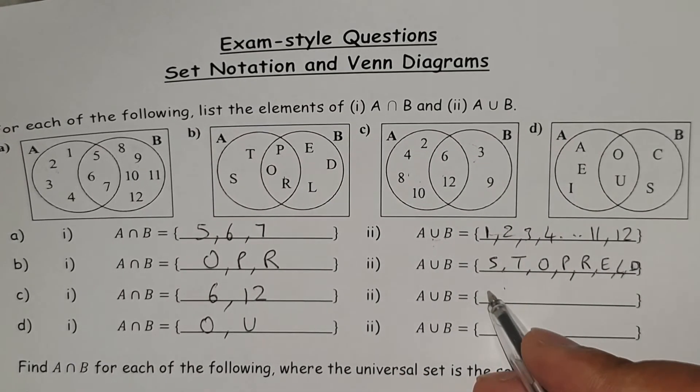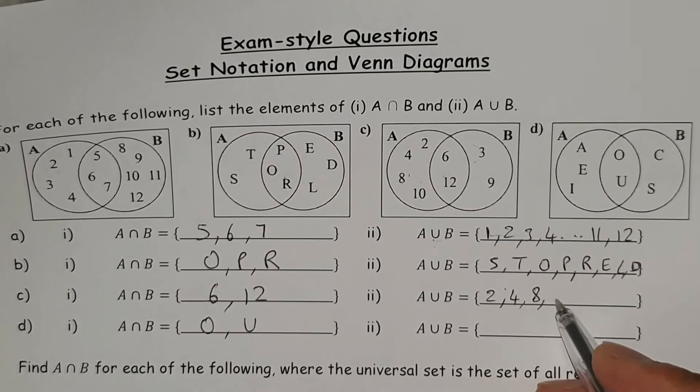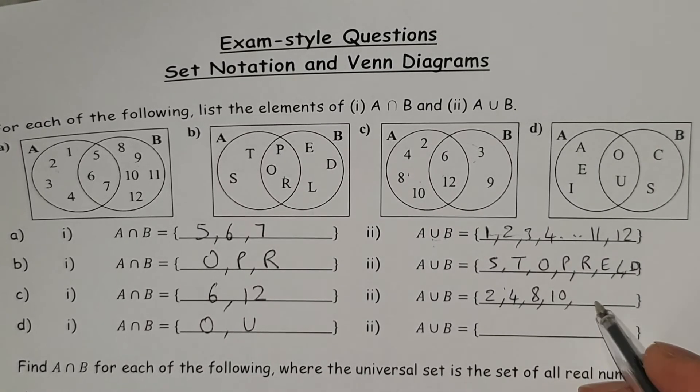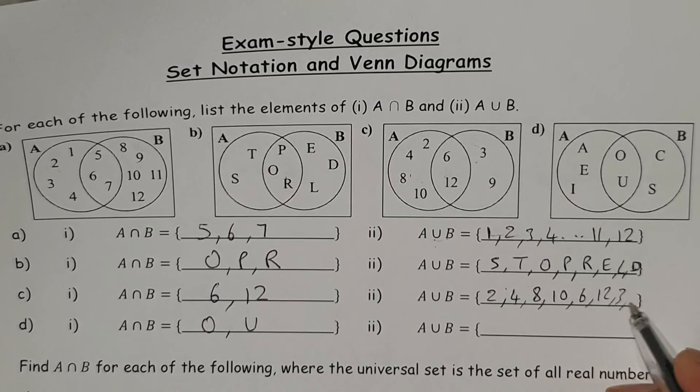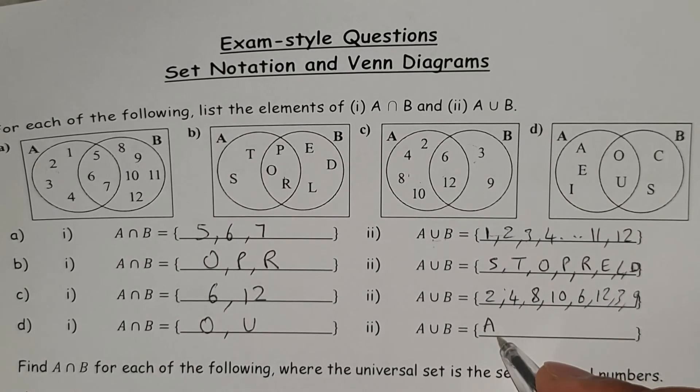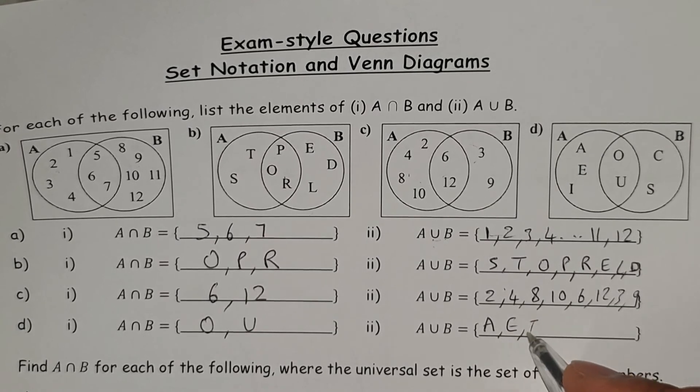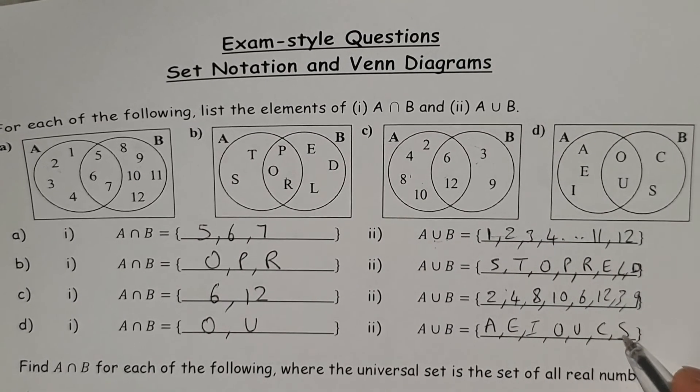Again, here it would be all of the numbers 2, 4, 8, 10, 6, 12, 3 and 9, and again this would be everything there. So A, E, I, O, U, C and S.